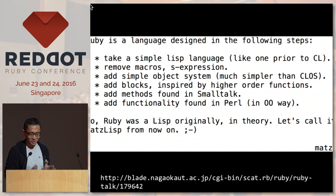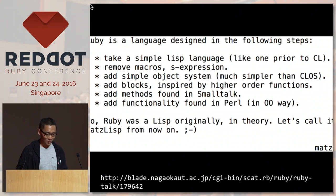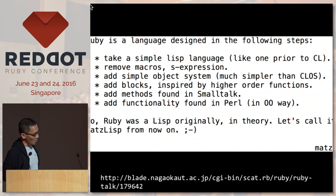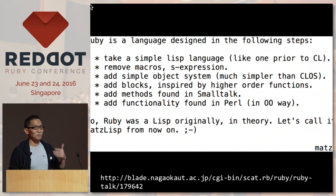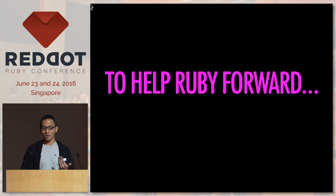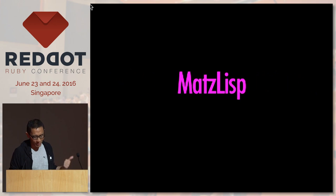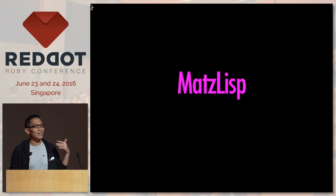And this is how he concludes: 'Ruby was a Lisp originally in theory.' So I propose — since Matz was saying he wants to move Ruby forward — to help move Ruby forward, we change the name to Matt's Lisp from now on.